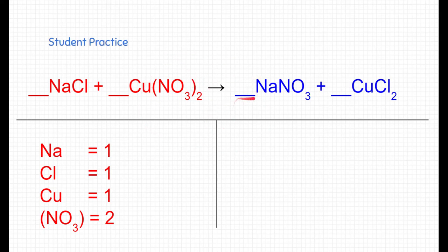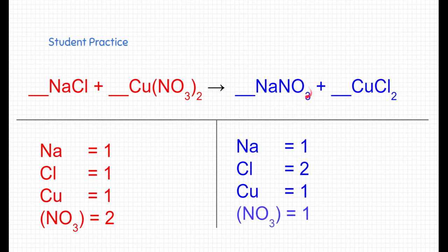All right, how about my product sides? I'm going to start with sodium. I see one sodium. Now I'm going to go to chlorine. I see two chlorines. Right away, we know this is not a balanced reaction. But let's keep going. I see one copper. And then look, there's my nitrate NO3. But I only have one set of that nitrate. So I'm going to count that whole thing as one cluster.